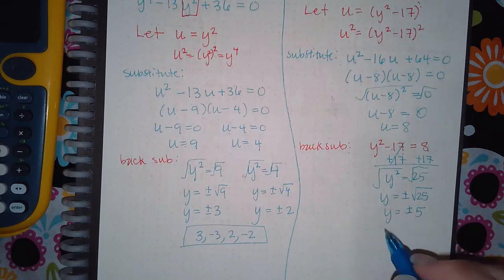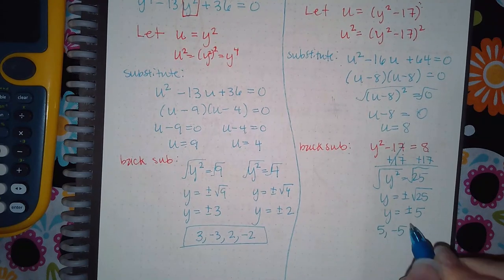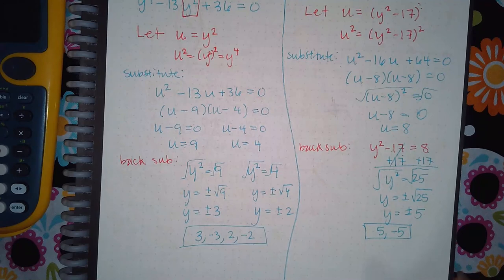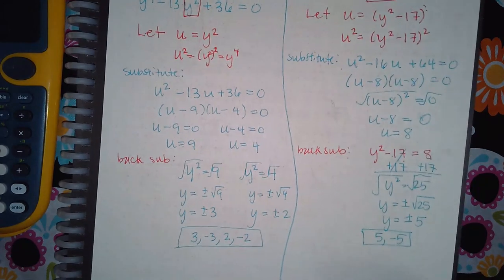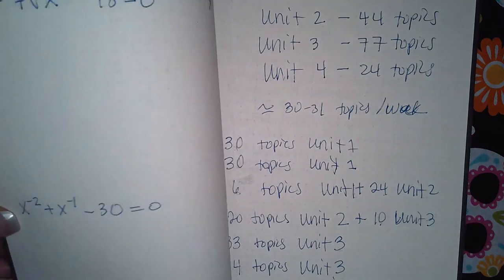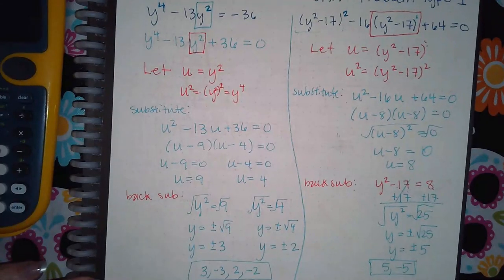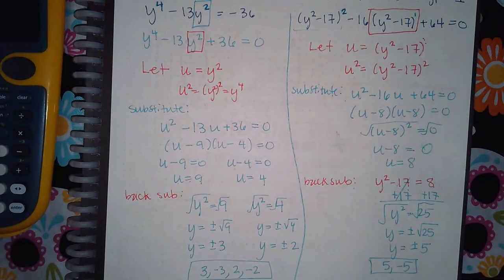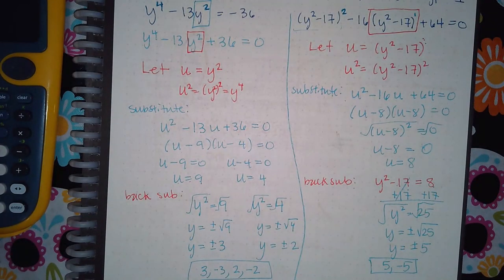So we get two solutions. 5 and negative 5. And so both of those problems were solved using the quadratic form. So in order to solve those, you have to do substitution. But you just can't forget to back sub after you've solved for the substituted variable. Back sub and then solve some more.